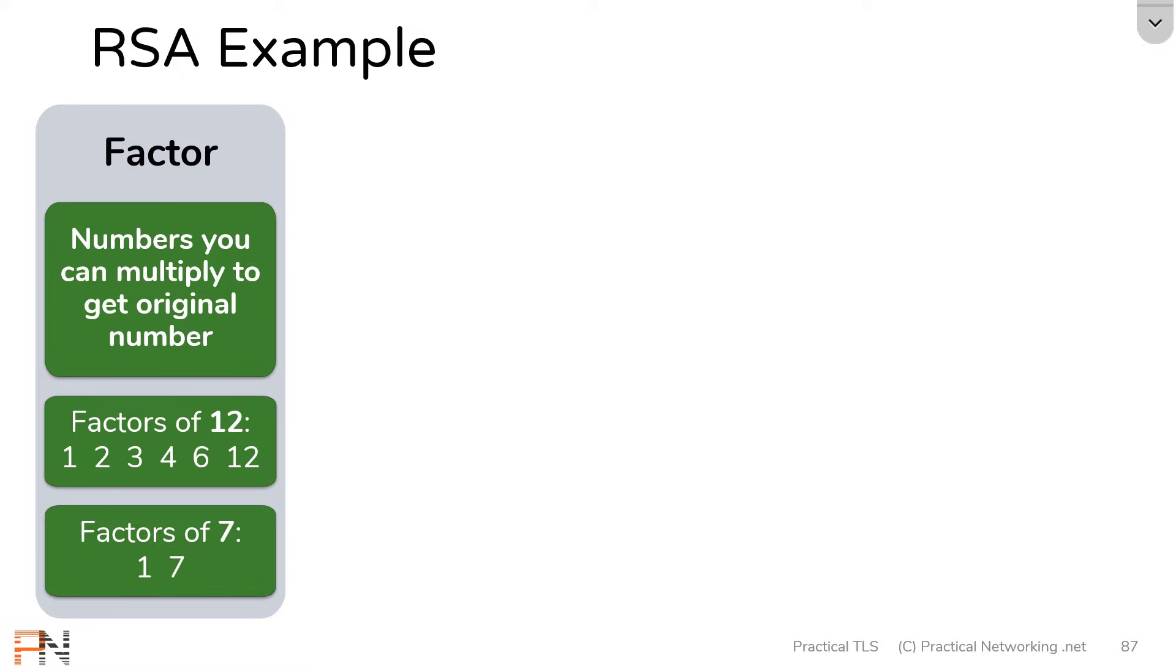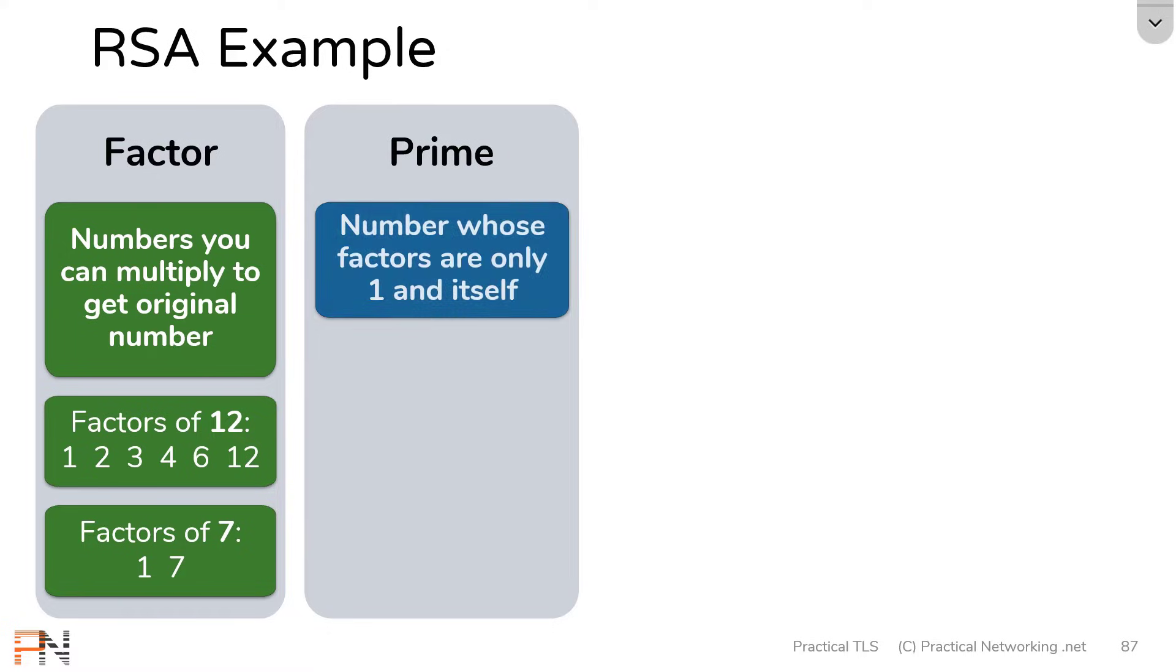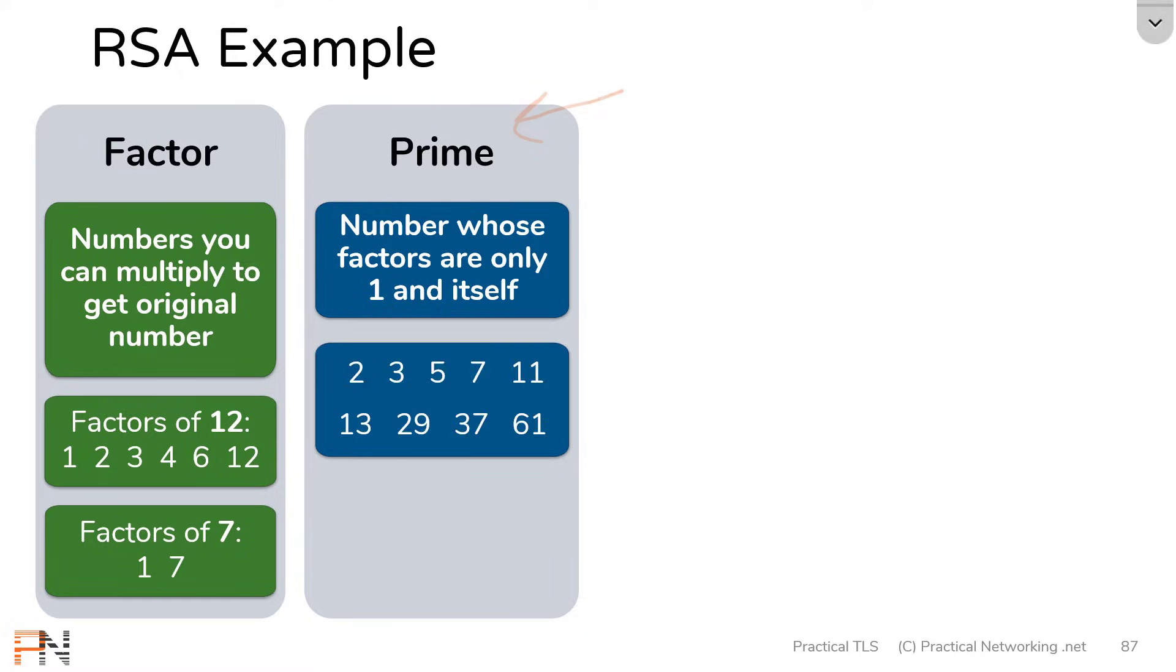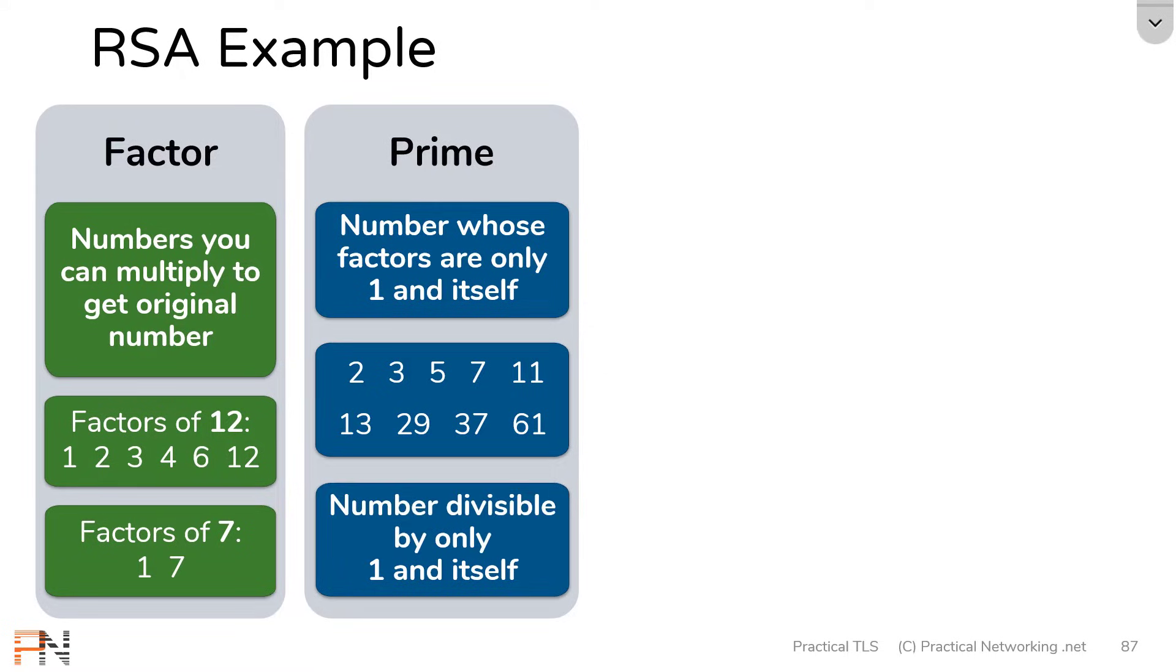Here is another example. Here are the factors of 7. You'll notice 7 only has two factors, 1 and itself. Every number will always be divisible by 1 and itself. But when a number is only divisible by 1 and itself, you get what's known as a prime number. 7 is a prime number. Here are examples of other prime numbers. Any of these numbers only have two factors, 1 and themselves. Another way of defining a prime number is simply any number that's only divisible by 1 and itself. These two definitions are pretty much the exact same thing.